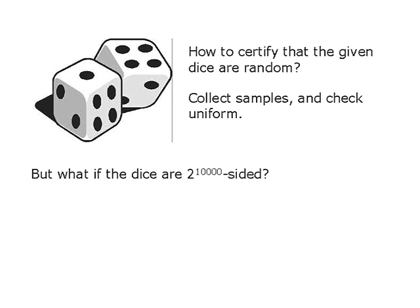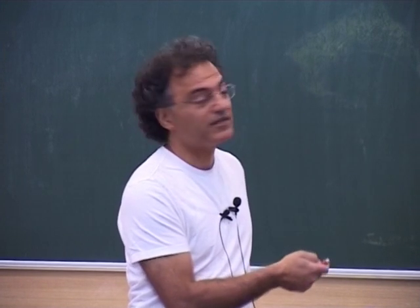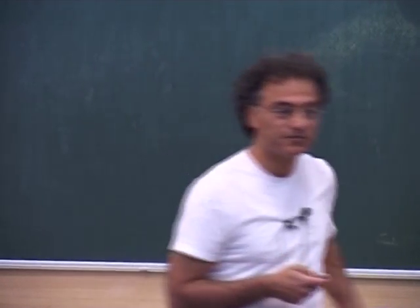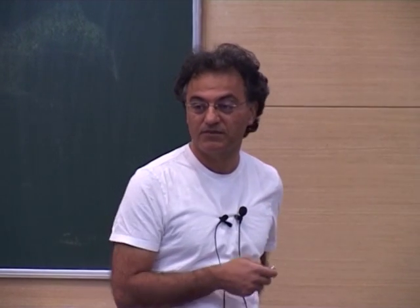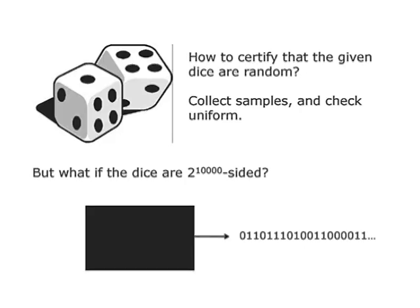If these are physical dice, it's clear what you do: you collect samples and check that they are uniform. But the problem I really want to talk about is where these dice are figurative — some sort of physical random number generator out of which you want to generate, say, 10,000 random bits. And this device has memory, so it's not like dice where you toss them many times and the dice don't remember what you tossed before. So how do you verify that the output is random?